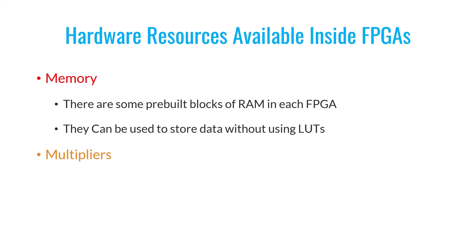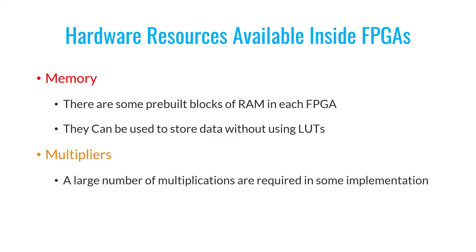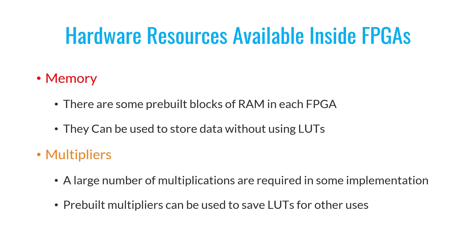Now let's explore multipliers, another crucial digital asset within FPGAs. Multiplication is a fundamental operation in digital design, especially when dealing with tasks like digital signal processing. If FPGAs didn't come with pre-designed multipliers, you'd be forced to use lookup tables to implement multiplications — but lookup tables are often in high demand for implementing various functions, so using them for multiplication would not be efficient. To solve this problem and achieve faster multiplication, FPGAs typically include a set of pre-built hardware-based multipliers that you can utilize in your designs.